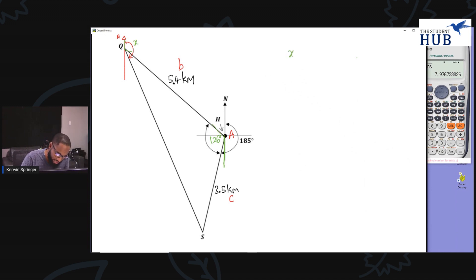If I name this angle x, x here is equal to 126 plus five. How did I get the five? Because this is 185 and this angle adds up to 180 degrees. So this angle is equal to five.